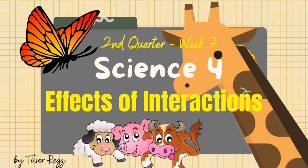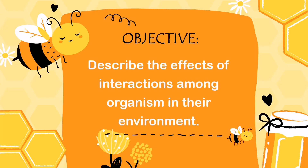No man is an island. This saying is also true for organisms in an ecosystem — no organism exists in isolation. Individual organisms live together in an ecosystem and depend on one another. In fact, they have many different types of interactions with each other, and many of these interactions are critical for their survival. At the end of this lesson, you will be able to describe the effect of interactions among organisms in their environment.